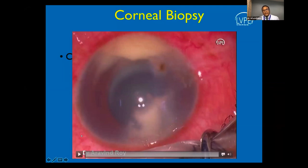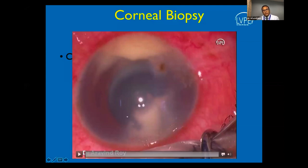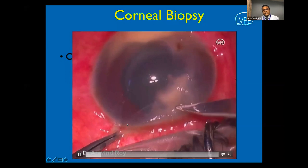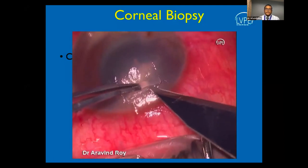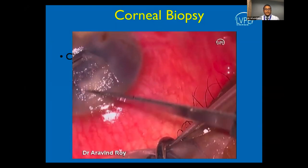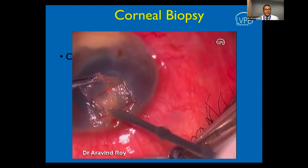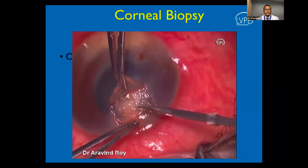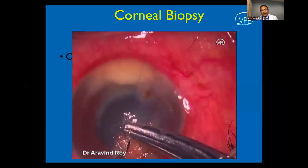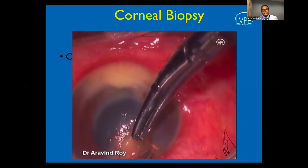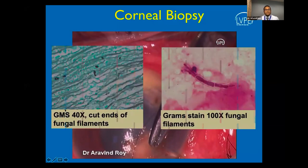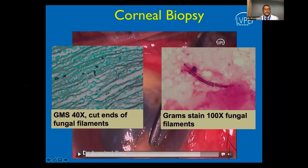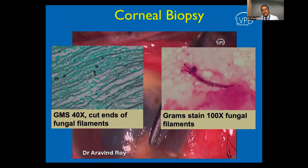Corneal biopsy is an important procedure for diagnosing deep-seated fungal infections. It is recommended for lesions off the visual axis, as shown in the representative video: the superficial healthy-appearing cornea is first dissected off, then scraping is taken from the deeper layers and a small block of tissue is excised and subjected to histopathology. The flap is secured with 10-0 nylon, and histopathology showed fungal filaments on GMS stain and septate hyaline filamentous fungus on Gram stain.